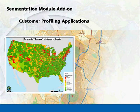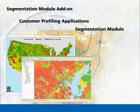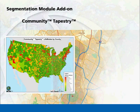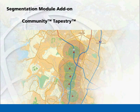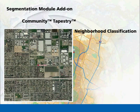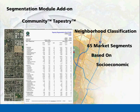For more refined customer profiling applications, an optional neighborhood segmentation module based on Community Tapestry ESRI segmentation system can be added. Tapestry classifies U.S. neighborhoods into 65 distinct market segments based on their socioeconomic, lifestyle, and demographic composition.